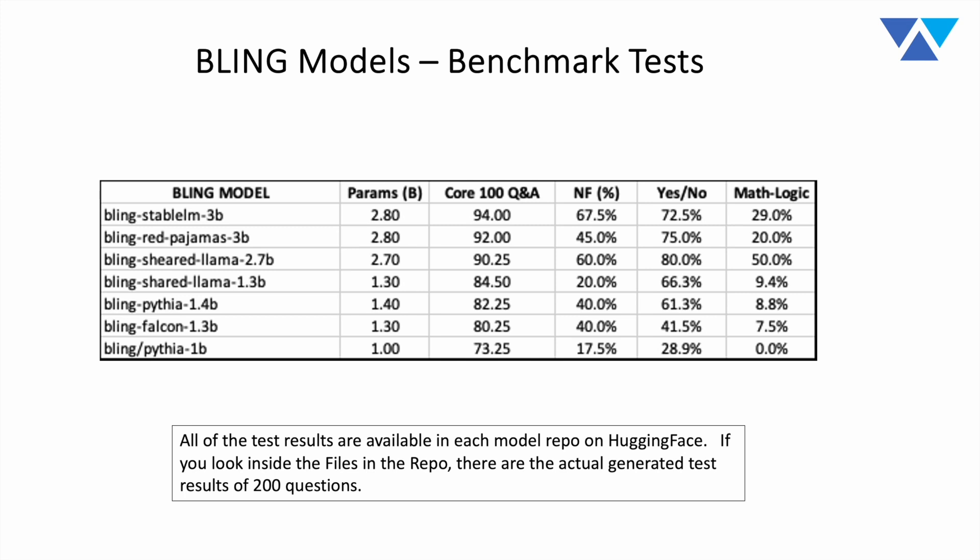The next three categories are instructive because you see a significant increase as you look at slightly larger models. The 'NF' or not-found classification covers the 20 questions where we tried to trick the model — smaller models tend to be tricked more easily, while larger models become more effective at recognizing the information is not in the provided passage. For yes/no Boolean questions, we were pleasantly surprised that models like Sheared LLaMA and Stable LLM were in the 60 to 80% range. However, all models were quite poor at basic math and logic. At 7 billion parameters we did start to see better math and logic results.